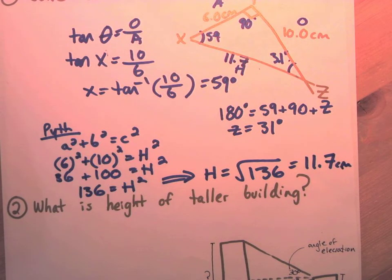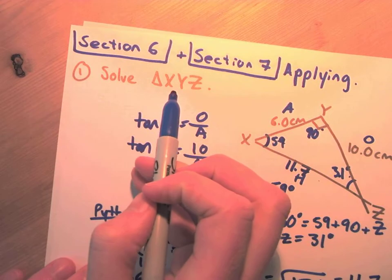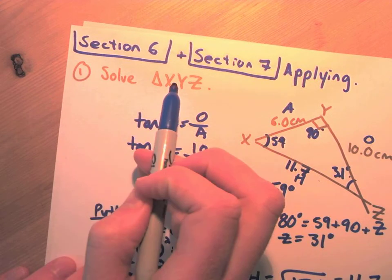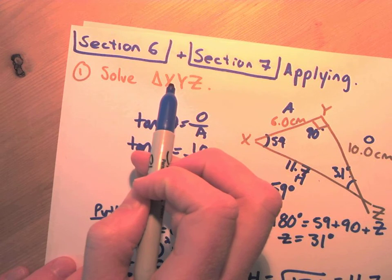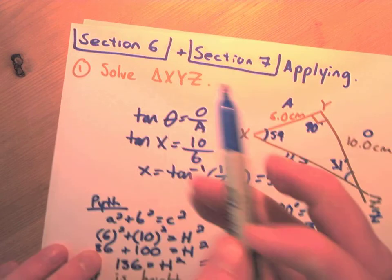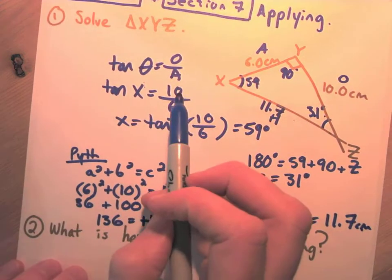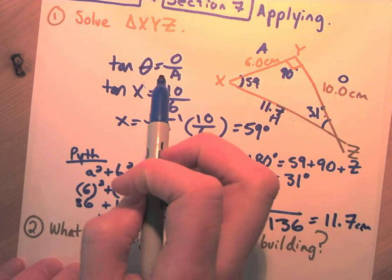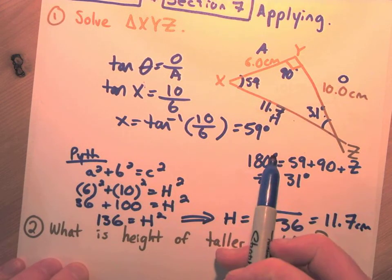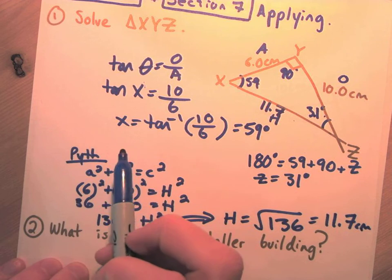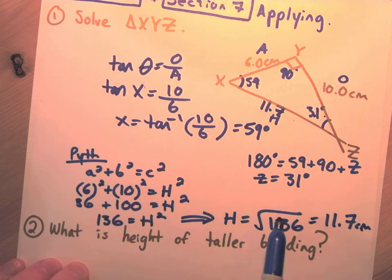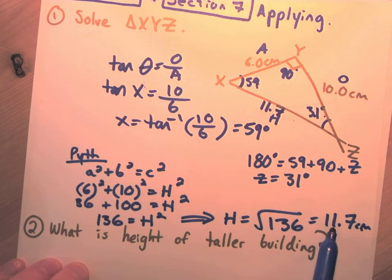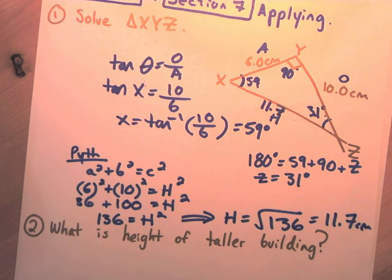So we've solved the triangle. When they say 'solve,' it just means do three things in one: find one angle, find another angle, and find a side length.